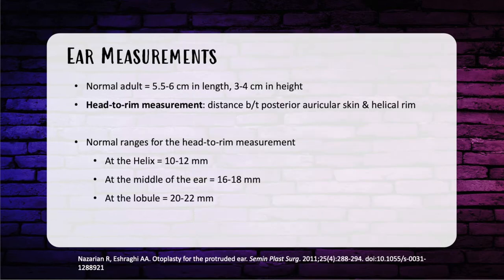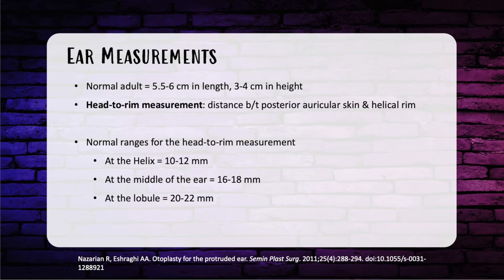The normal adult ear is about 5.5 to 6 centimeters in length and 3 to 4 centimeters in height. The head-to-rim measurement refers to the distance between the posterior auricular skin and the helical rim. Normal ranges are: at the helix, 10 to 12 millimeters; at the middle of the ear, 16 to 18 millimeters; and at the lobule, 20 to 22 millimeters.